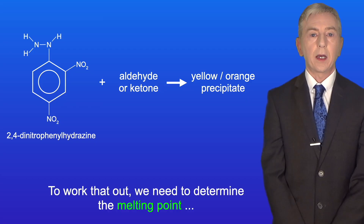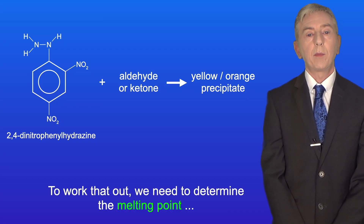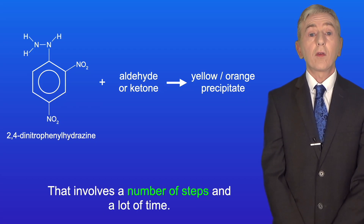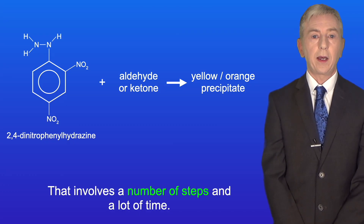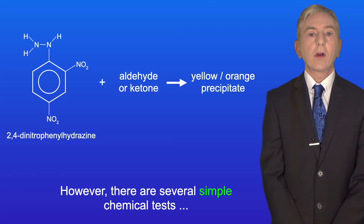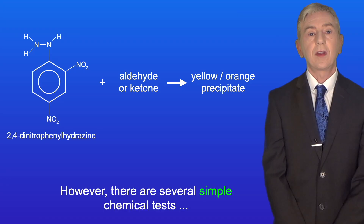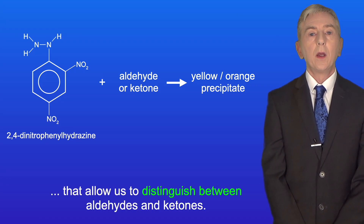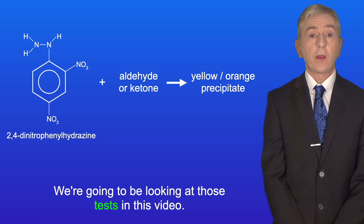To work that out, we need to determine the melting point of the yellow-orange precipitate, and that involves a number of steps and a lot of time. However, there are several simple chemical tests that allow us to distinguish between aldehydes and ketones. We're going to be looking at those tests in this video.